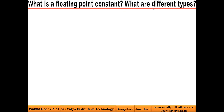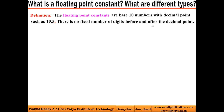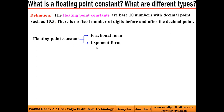Now let us see what is a floating point constant and what are the different types. The floating point constants are base 10 numbers with decimal point, such as 10.5. There is no fixed number of digits before and after the decimal point. Floating point constants are classified into two categories: the first one is fractional form, and the second one is exponent form, which is also called scientific form.